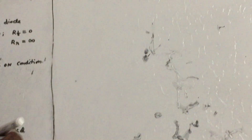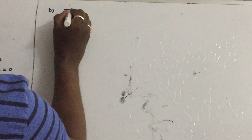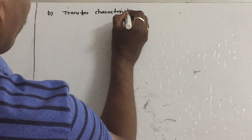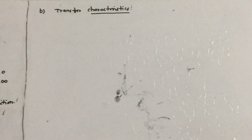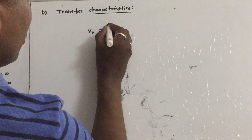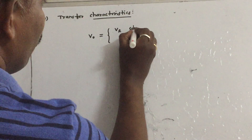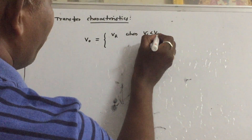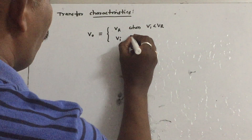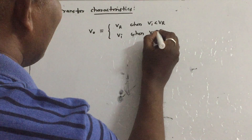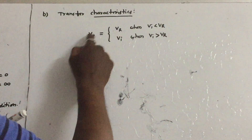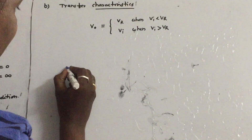Now let us draw the transfer characteristics — the characteristics between input and output. The equations are: V0 equals Vr when Vi is less than Vr, and V0 equals Vi when Vi is greater than Vr. Let us now draw these equations in terms of a graph, which is called the transfer characteristics graph.